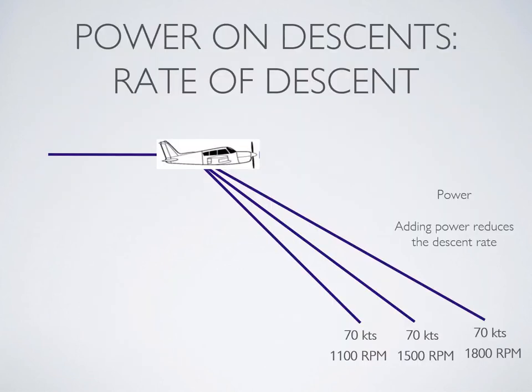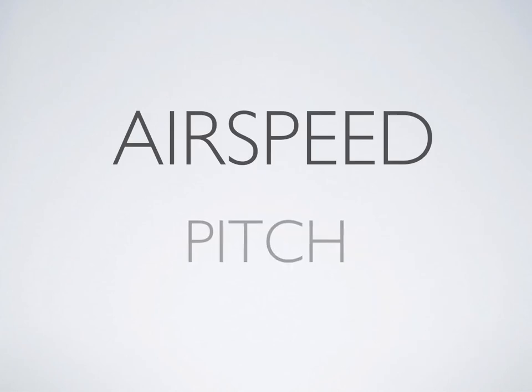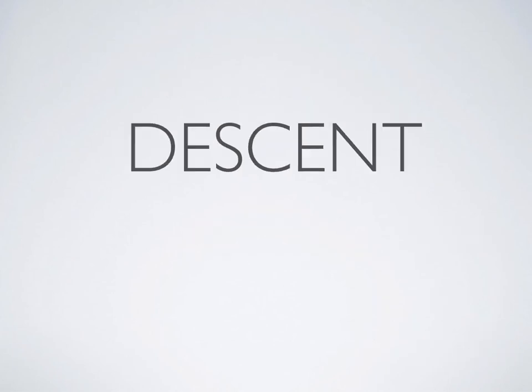A power-on descent is not all that different. You're using power to enter a more controlled descent so that you can alter your descent profile by both adding and removing power while keeping the same airspeed. One thing you'll hear often: pitch controls airspeed and power controls descent rate. If you want to change your airspeed, think pitch. If you want to increase or decrease your rate of descent, think power.